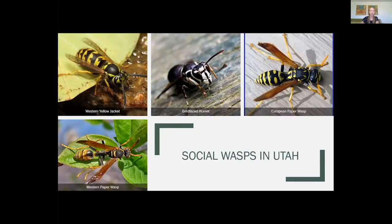Here are the most common of each type. We have the western yellow jacket — these are the most aggressive. These tend to be the guys that will fly up to you if you're eating outside, try to steal your food, kind of bug you. They will defend their colony without too much provocation, so you have to be a little bit careful. You can tell them apart from the European paper wasp because they're a little bit chunkier and have a more abrupt, defined waist.